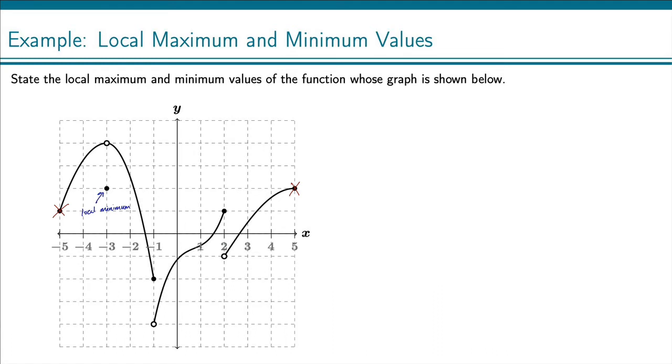Continuing along the curve, we get another discontinuity point right here, and this point is higher than the points on the left and it is higher than the points on the right. So that means that this point is a local maximum.